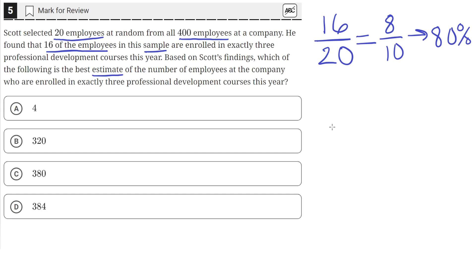In order to find an estimate for the number of employees in the whole company, which has 400 people, we need to find what 80 percent of 400 is, since we're using the result from the sample and applying it to the whole population.